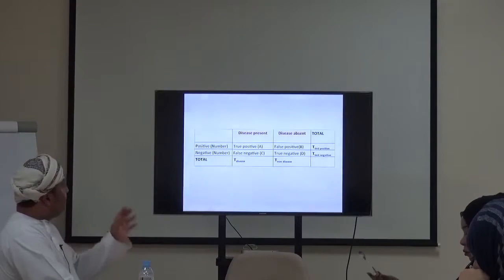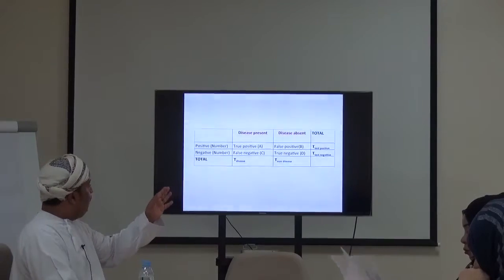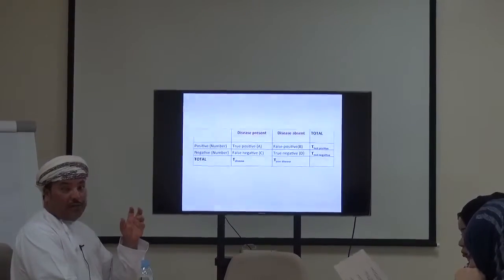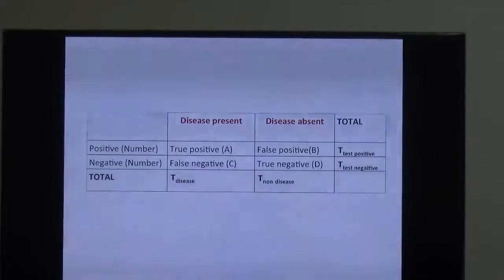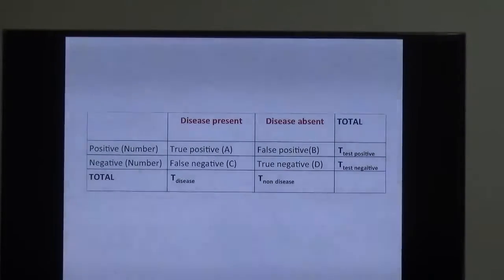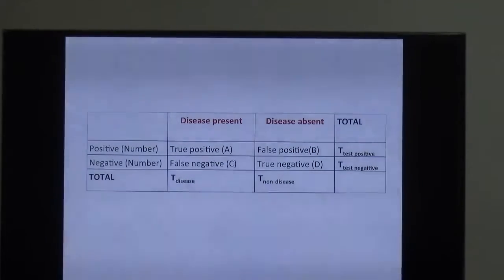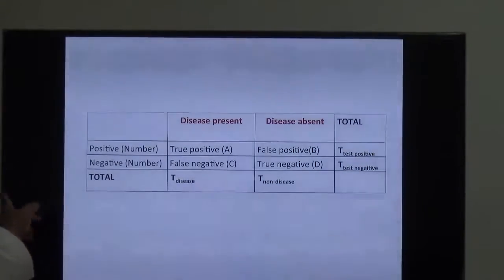Here is the 2x2 table used for all calculations. We have disease present and disease absent as columns, and positive and negative test results as rows. Those truly positive are labeled A; those who are false positive are labeled B. For the negative row: false negatives and true negatives. The total disease column gives total with the disease, and the total no-disease column gives total without the disease.